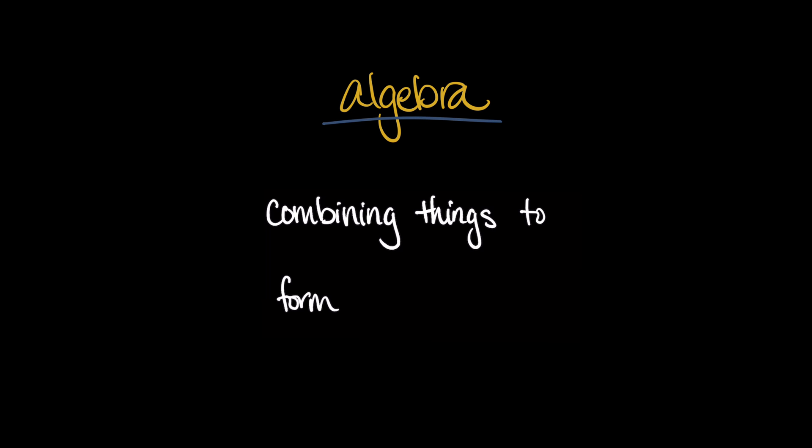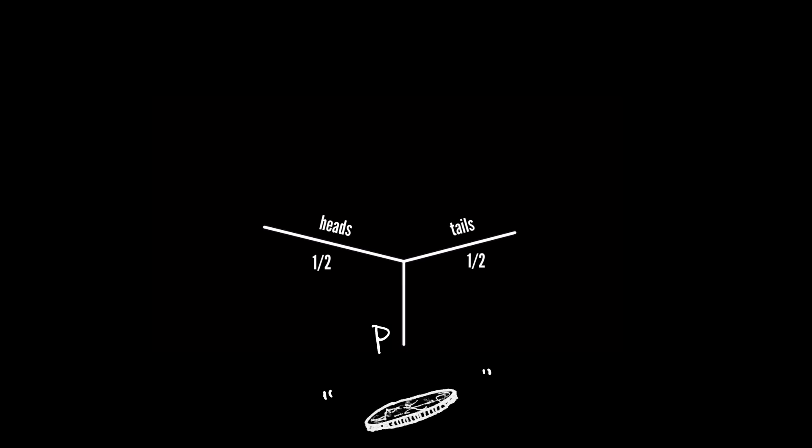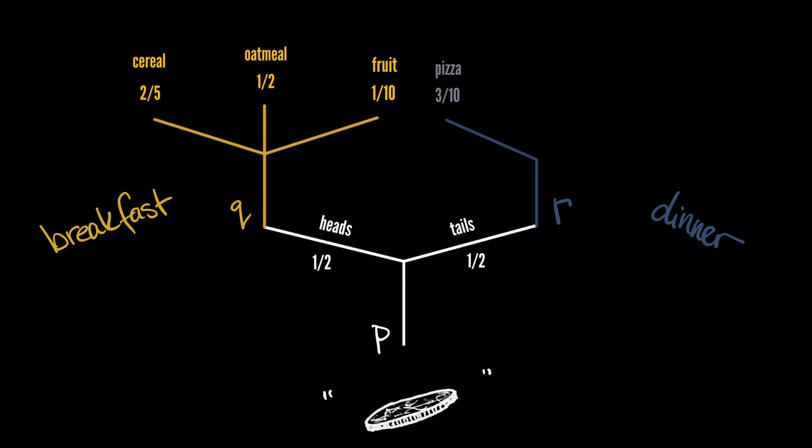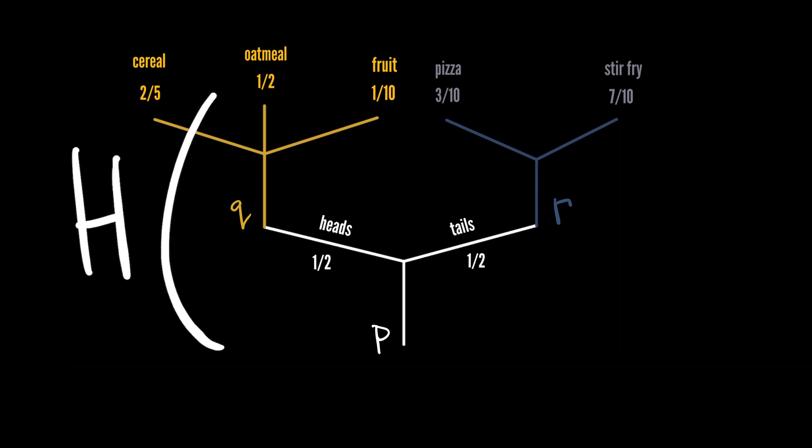But there's one more layer to this, and this is where algebra comes in. In algebra, we combine things to form new things. We can multiply numbers to get a new number. Likewise, there is a way to combine probability distributions to get a new probability distribution. For example, you can imagine flipping a coin and then choosing a meal for either breakfast or dinner based on which face the coin lands. Now, it's natural to wonder, what is the entropy of this new composite distribution?